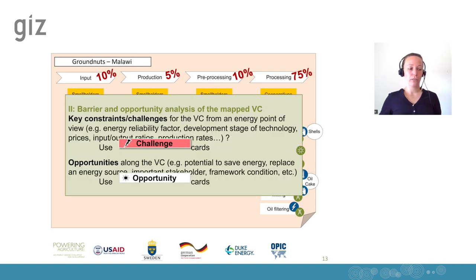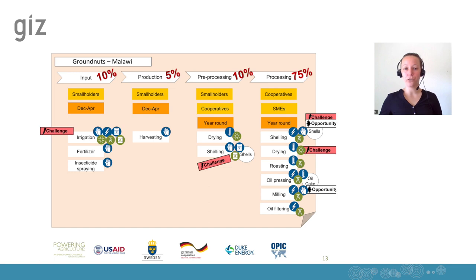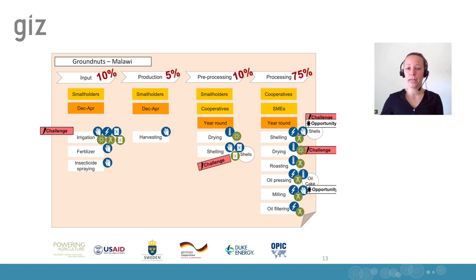When we finish this first mapping of the current situation, we move to the second sub-step: a barrier and opportunity analysis of the mapped value chain. In this step, we analyze key constraints and challenges — marked on red cards — and opportunities marked on white cards. We have a few opportunities and challenges for the groundnut value chain. The opportunities are mainly where biomass is produced that can be used as an energy source. I would like to zoom in on drying under the processing step.